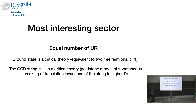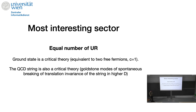The most interesting sector for the XX spin chain is the one where you have an equal number of ups and rights — a diagonal chain, because that's the most degenerate. The ground state of the XX spin chain is solvable by free fermions. This is a mathematical result from condensed matter physics. The ground state is a critical theory equivalent to two free fermions — it has a c=1 theory. So already in leading-order perturbation theory, you're seeing pieces of the string that have critical fluctuations.